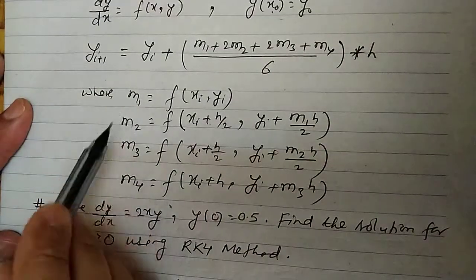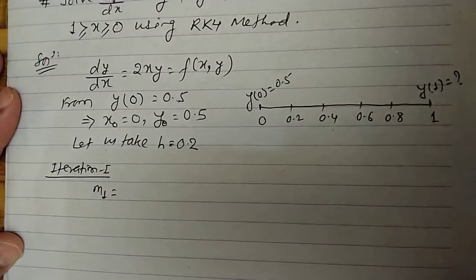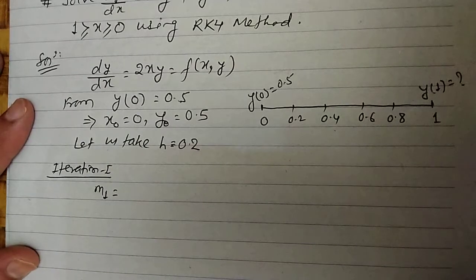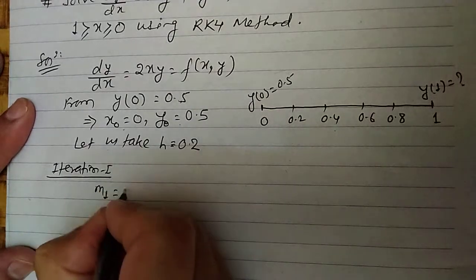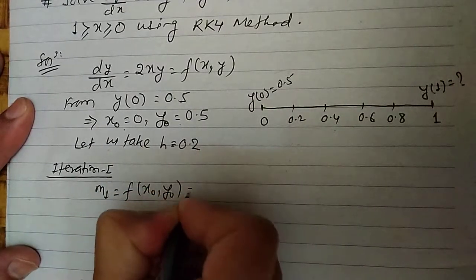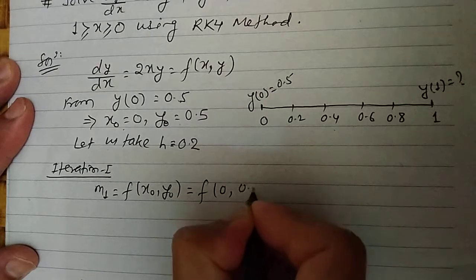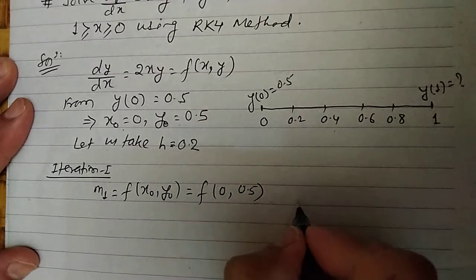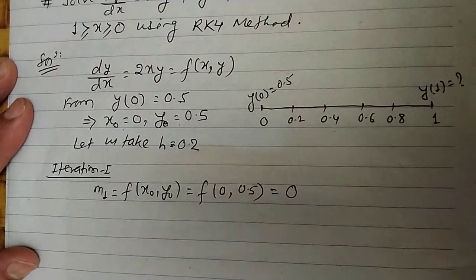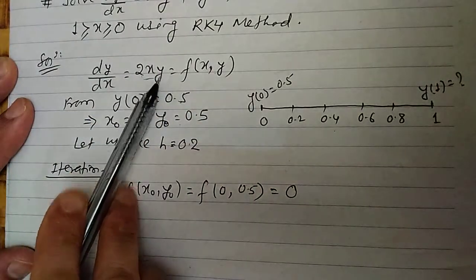Let's do iteration 1. We need to calculate m1, m2, m3, and m4. m1 equals f(x0, y0), which is f(0, 0.5). Since f(x,y) = 2xy, this gives 2 × 0 × 0.5 = 0.